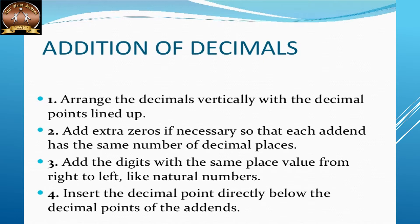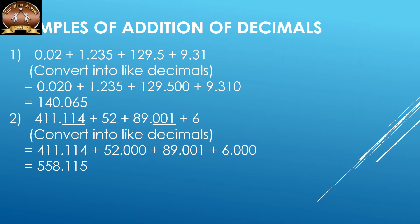Then place the decimal point below the others. Let's see this example: 0.02 plus 1.235 plus 129.5 plus 9.31. The greatest number of decimal places is three, so each decimal must have three decimal places. Adding zeros: 0.020 plus 1.235 plus 129.500 plus 9.310 — the sum is 140.065.